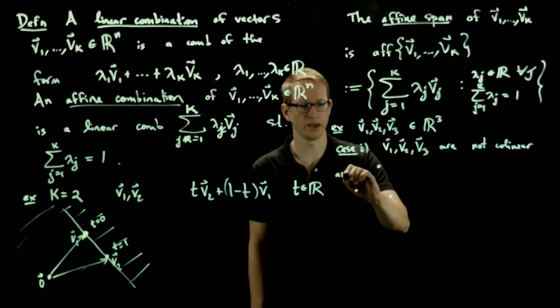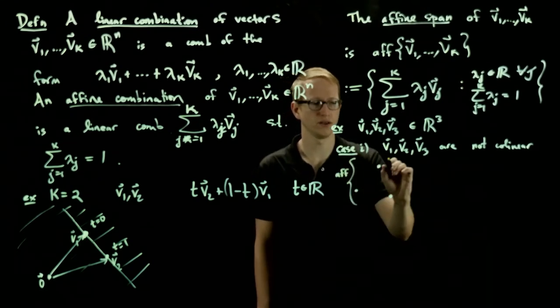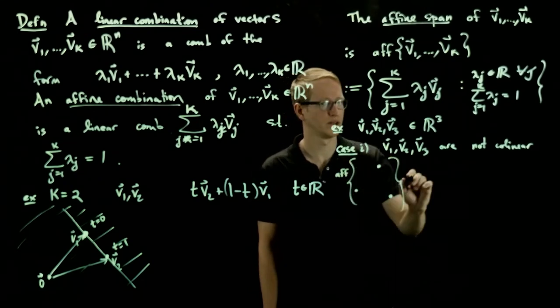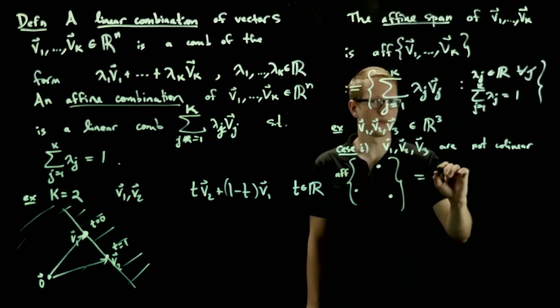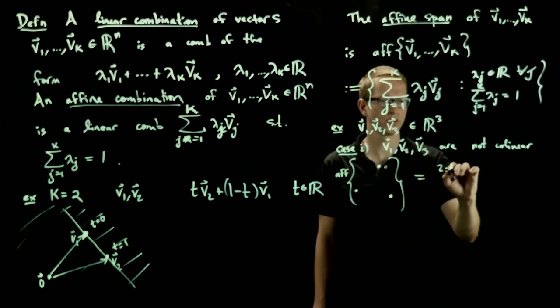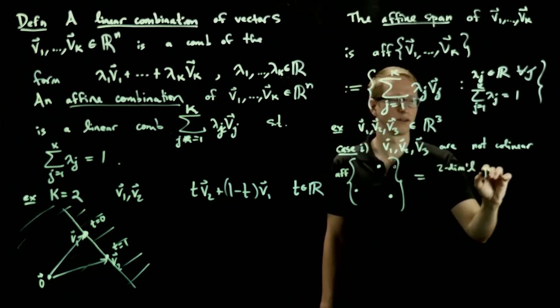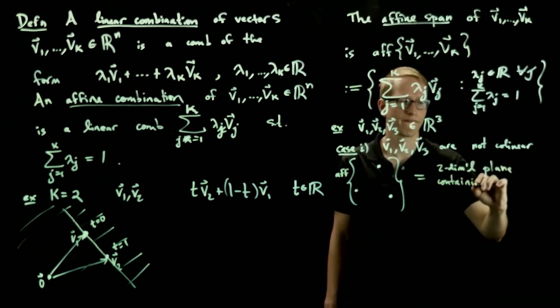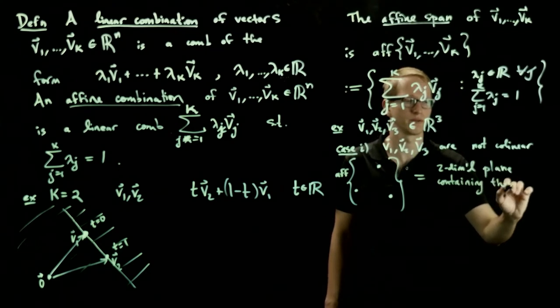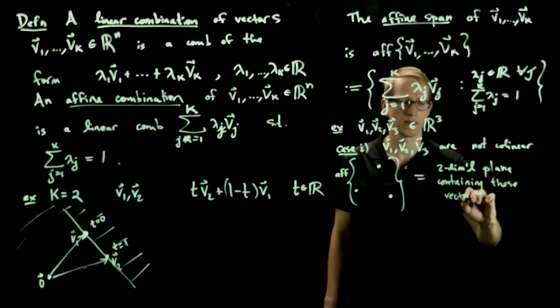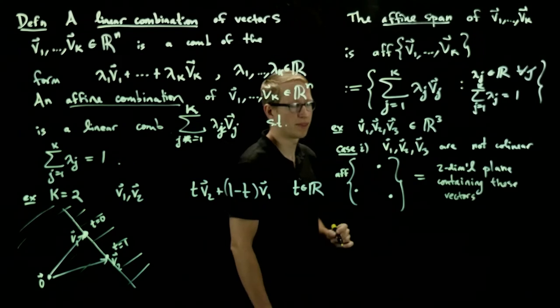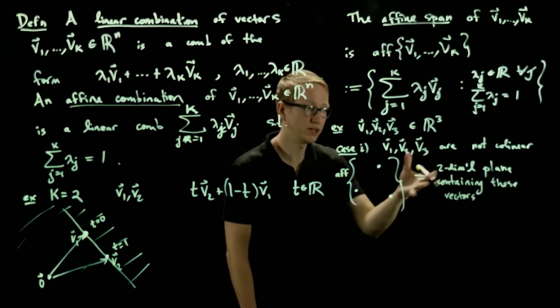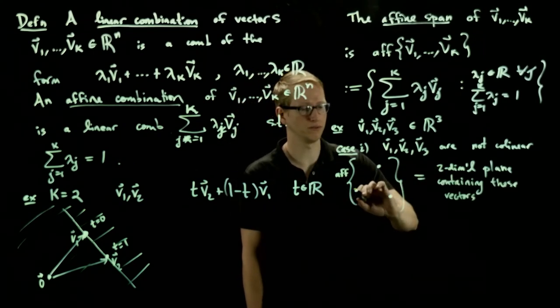Then the affine span of these three vectors is equal to the two-dimensional plane containing these vectors. And it's not so immediately obvious that that's what happens, but let's just think about this.